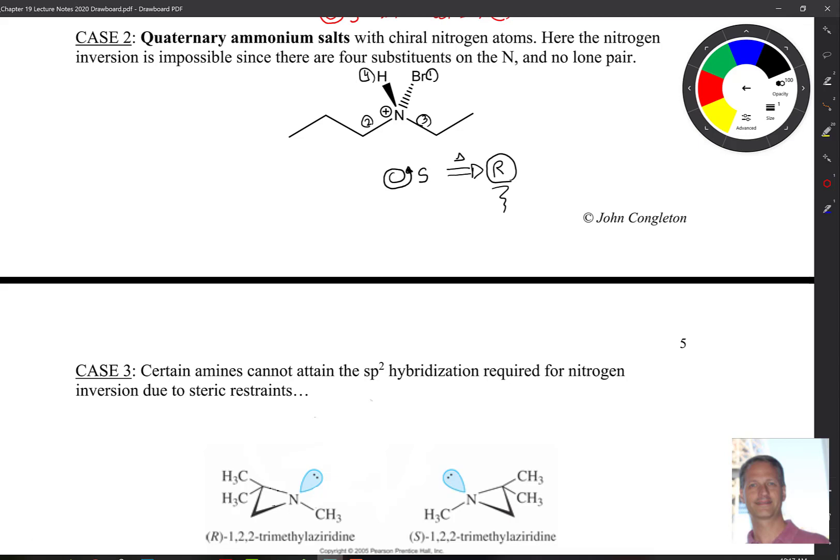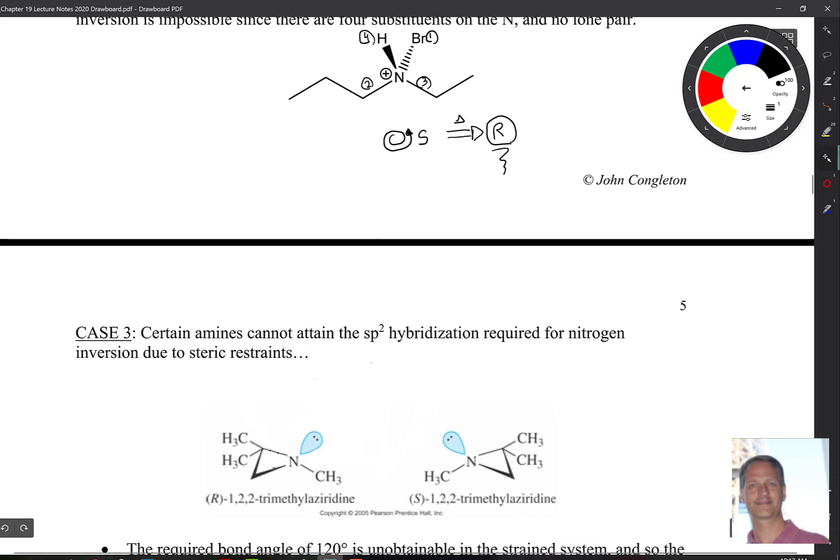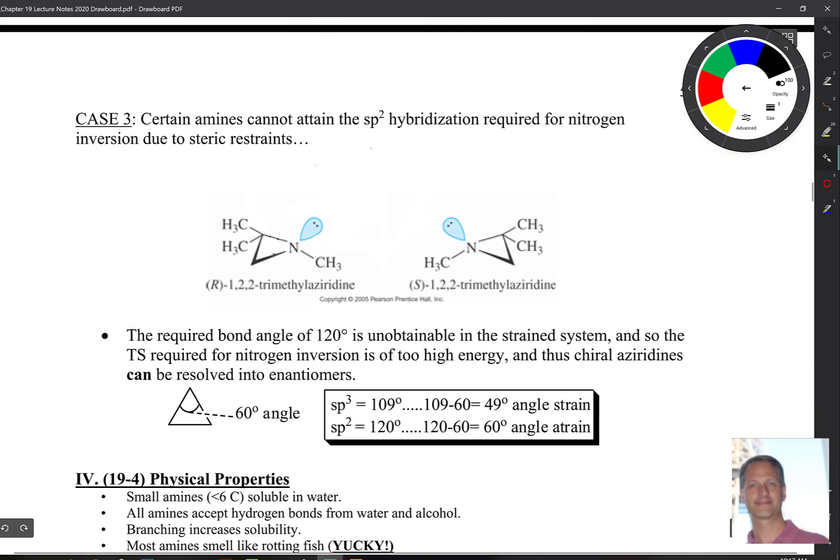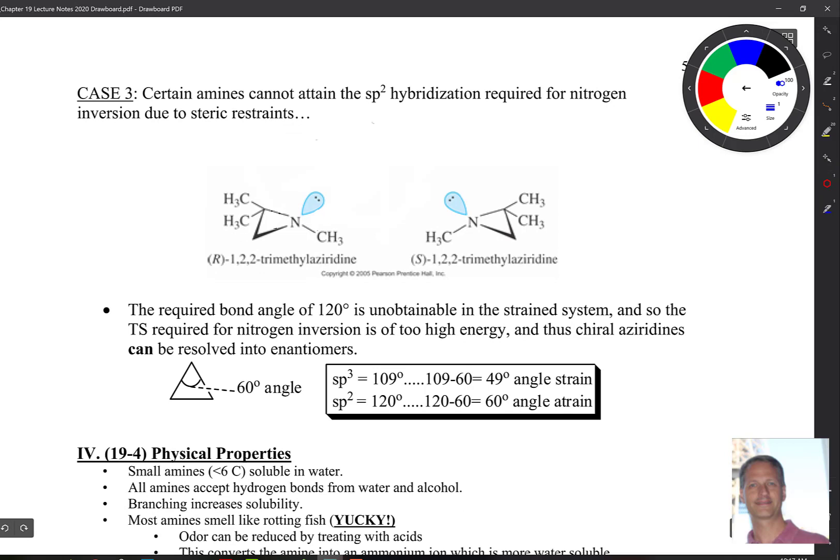The third case where we do see chirality is where we have that steric restriction of obtaining that transition state. Here's an example from your Wade textbook. When you look at this molecule, in theory this bond angle is 60 degrees. It turns out to not be exactly 60 because the orbitals of that sp3 nitrogen actually overlap and bend a little bit more, so they're not head-on. They're kind of like a bent bond, but let's call it 60 for the sake of our argument.